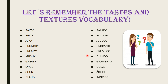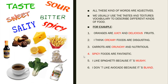All these kinds of words are about taste and texture vocabulary. We usually use tastes and texture vocabulary to describe different kinds of food. And all these kinds of words are adjectives. We have some example sentences.